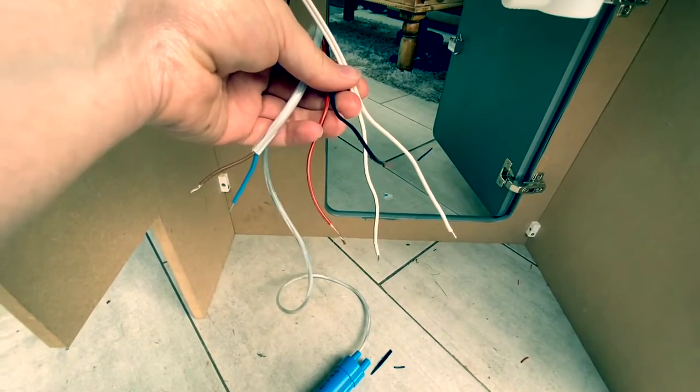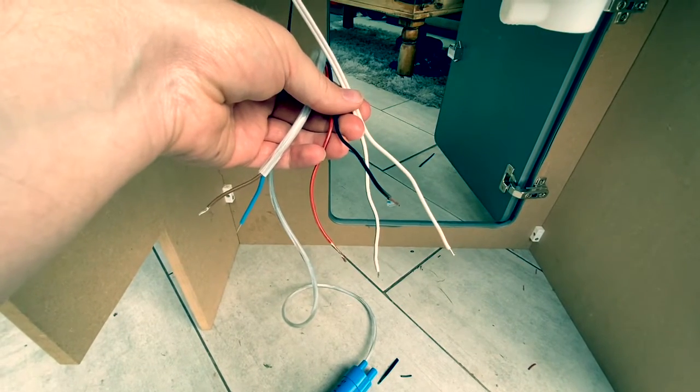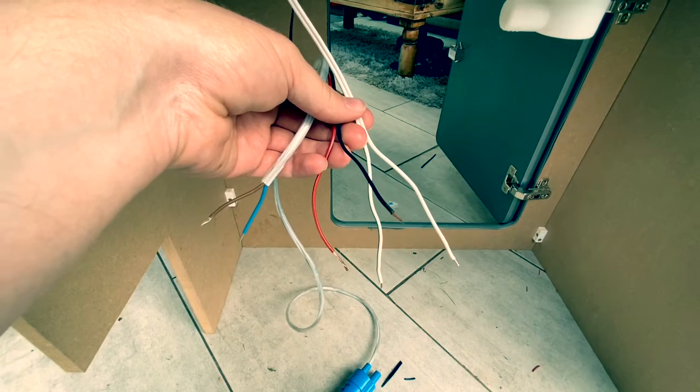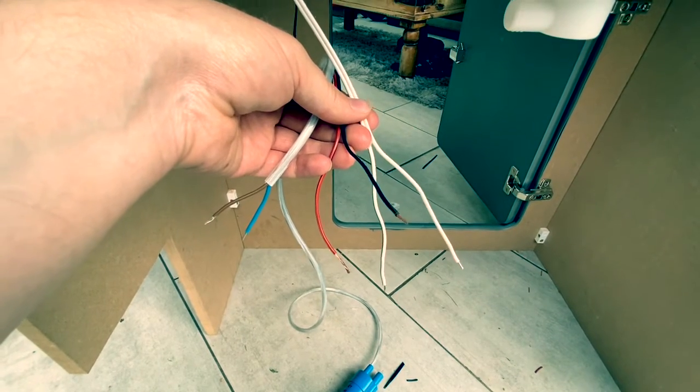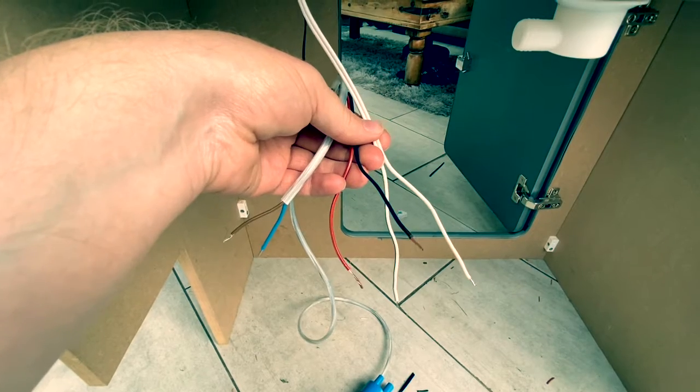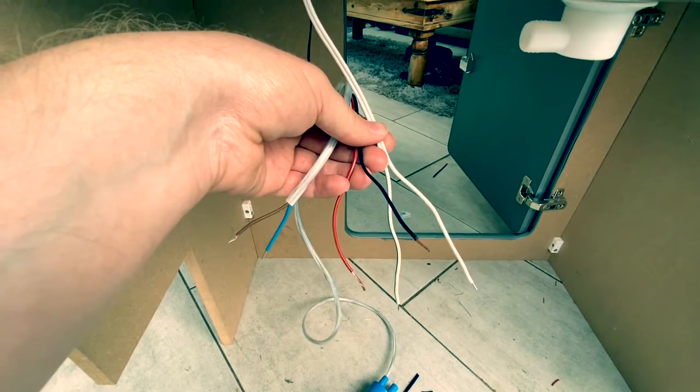Those are the three sets of wires that we're going to be using. In terms of the sequence, the positive of the pump, the brown wire, is going to go to the negative of the micro switch in the tap.